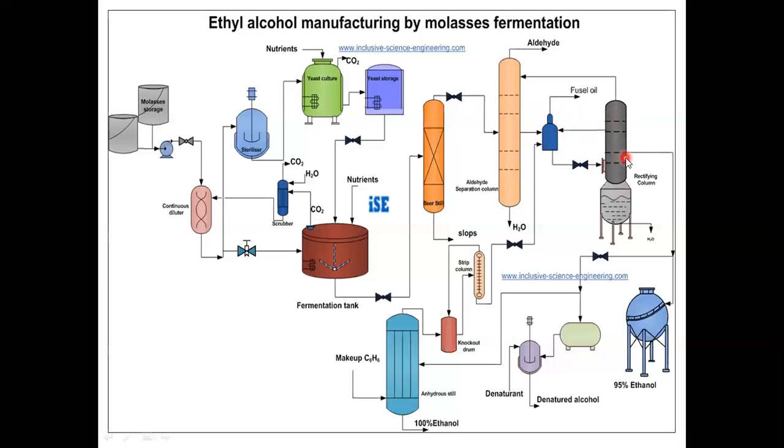In this column, an azeotropic alcohol water mixture of 95% ethanol is withdrawn as a side product. You can see from here, this 95% ethanol is withdrawn from this rectifying column. This 95% ethanol is condensed in a condenser and stored in a storage tank. At the bottom of this rectifying column, water is discharged.